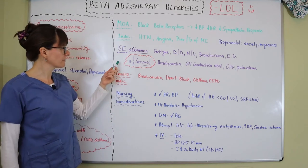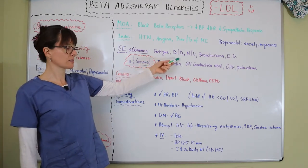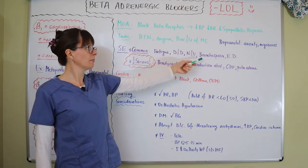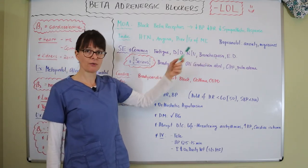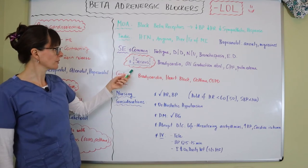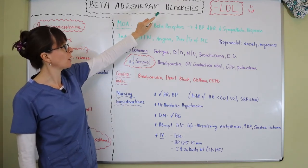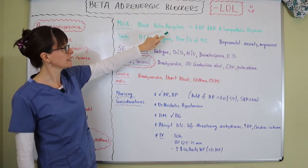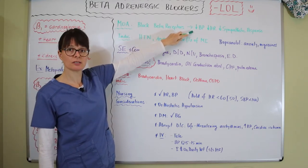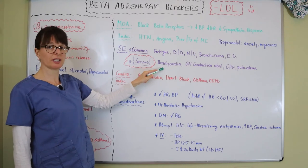Common side effects of beta blockers include fatigue, dizziness, drowsiness, nausea, vomiting, bronchospasm, and erectile dysfunction. More serious side effects result from blocking beta receptors and decreasing heart rate and blood pressure, which can produce significant bradycardia.